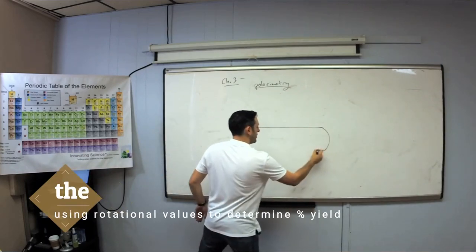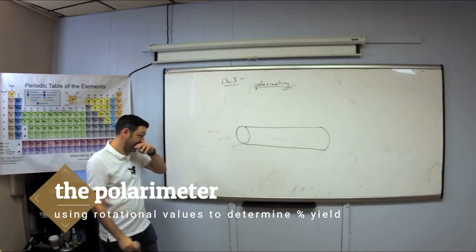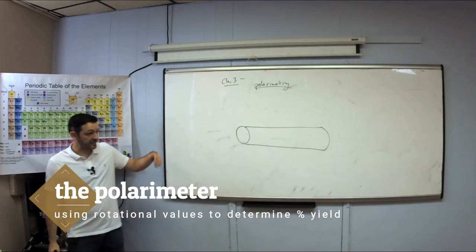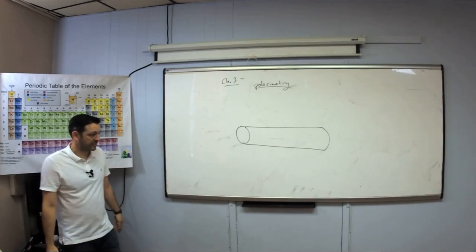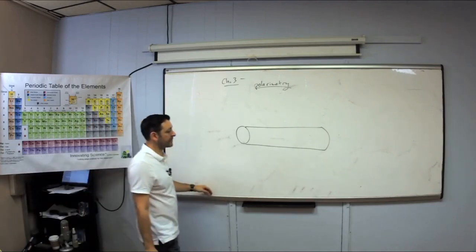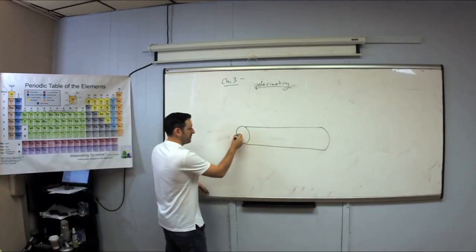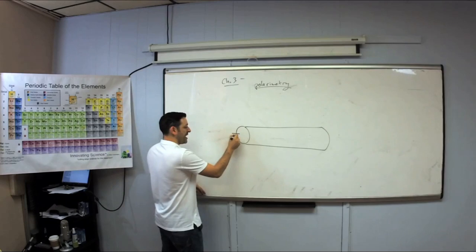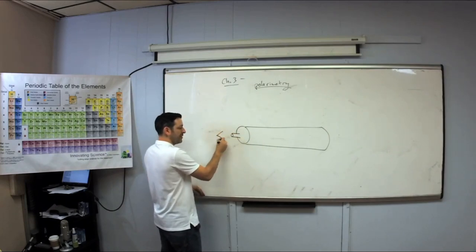There is an instrument called a polarimeter, and this thing has been around since the 1800s. There is an eyepiece that you can look through.